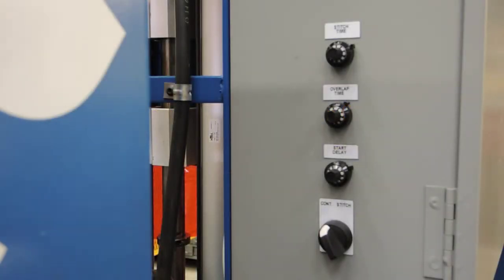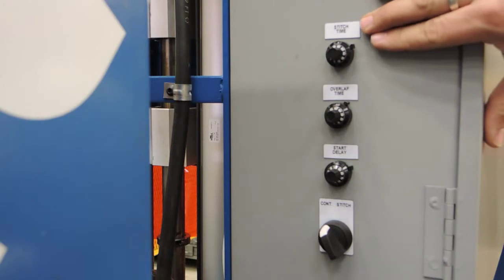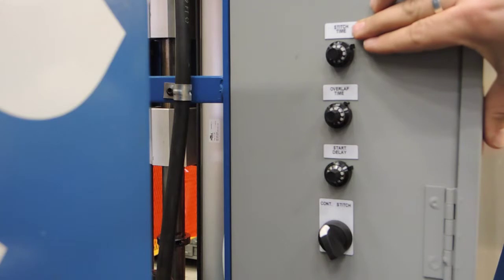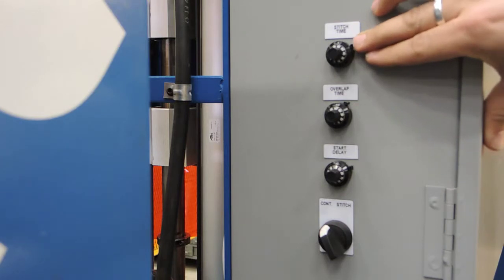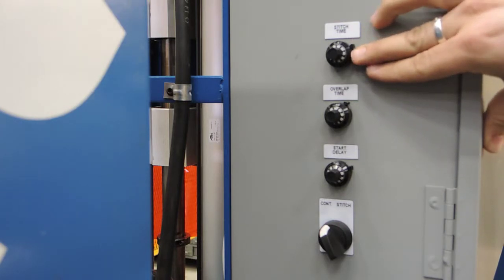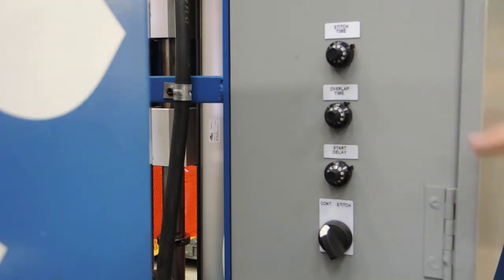On the side of the main panel, our first knob starting at the top is stitch time. This dictates how much of a stitch weld we put on the part. The machine is set to do four welds 90 degrees apart, so the count will remain the same, but it's up to the operator to determine the length.